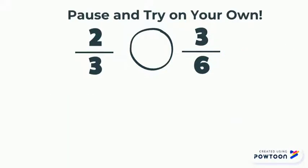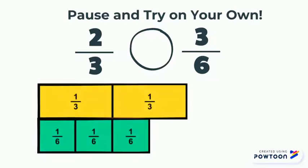Hopefully your work looked something like this. After building the fractions, you can see that the two-thirds pieces are longer than the three-sixths pieces. This means that two-thirds is greater than three-sixths.